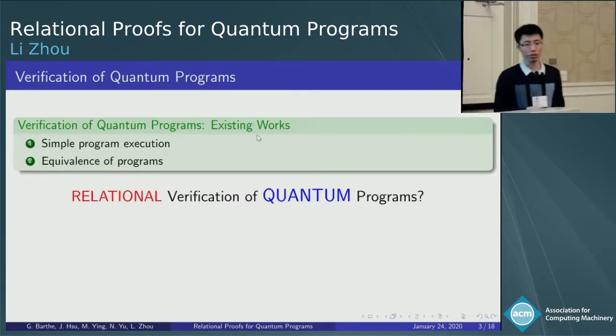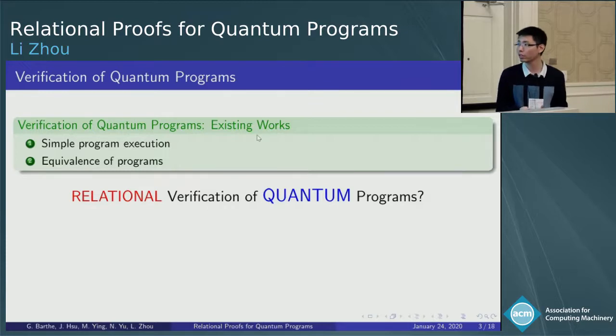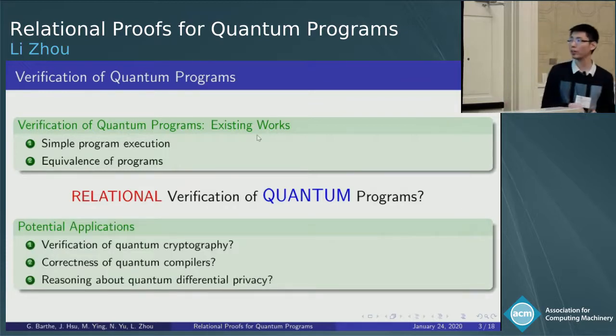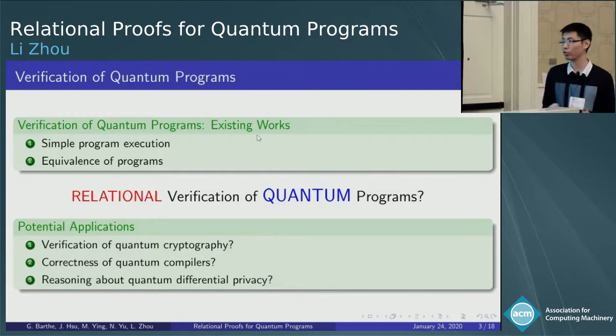...and a few works focus on the equivalence of programs using bi-simulation and symbolic methods. So, is it possible to develop logic to reason about general relational properties of quantum programs? Of course, there are many potential applications, such as verification of quantum cryptography, correctness of quantum compilers, and reasoning about quantum differential privacy.